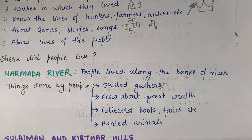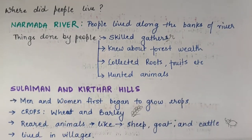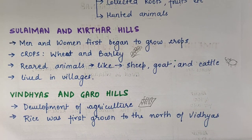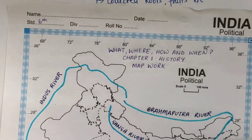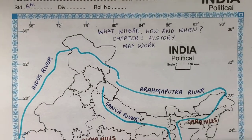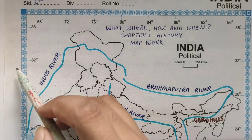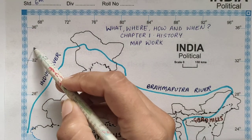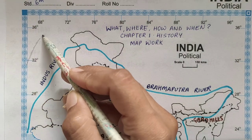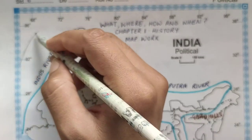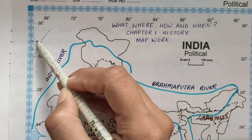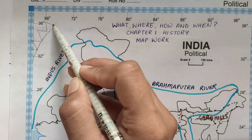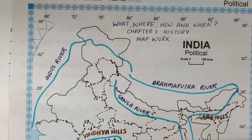The next place is Suleiman and Kirtar Hills. Where are Suleiman and Kirtar Hills? This hill is in Pakistan. This map is only of India, so that's why we cannot see Suleiman and Kirtar Hills here. But there are some hills in that area — they are the Suleiman and Kirtar Hills.